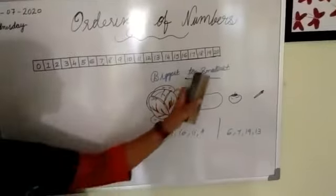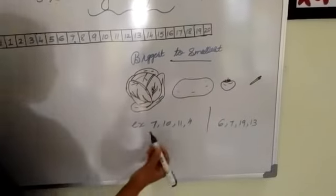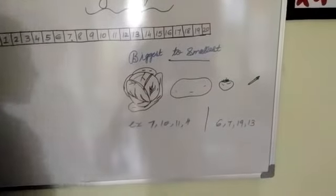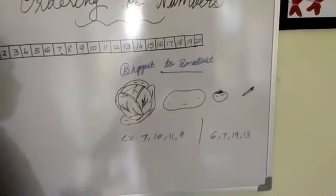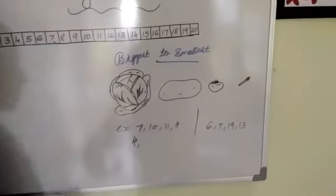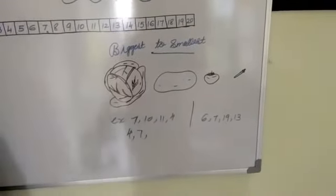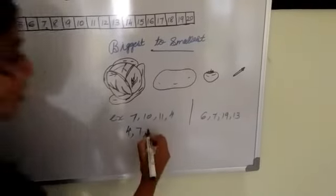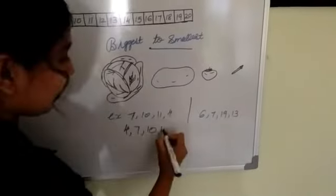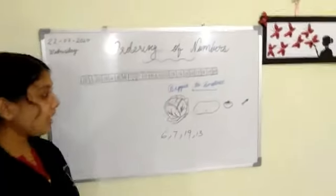The next one is biggest to smallest. These vegetables are arranged from biggest to smallest in size. We can arrange numbers from biggest to smallest. So for example: 7, 10, 11, 4. In this series we have two one-digit numbers: 4 and 7. Which is the smallest one-digit number? Definitely that is 4, so we write 4 first, then 7. The other two numbers are two-digit numbers: 10 and 11. Which is the smaller two-digit number? Yes, definitely it is 10. So we write 10, then 11. We get the answer from smallest to biggest: 4, 7, 10, 11.